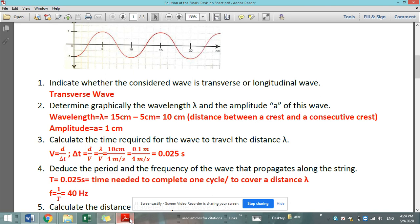The d here, which is the lambda over v, which is given. So 10 cm over 4 m per second, we have to convert the distance to SI unit. To convert from cm to m, we divide by 100. So we get 0.1 m over 4 m per second. It's 0.025 seconds.